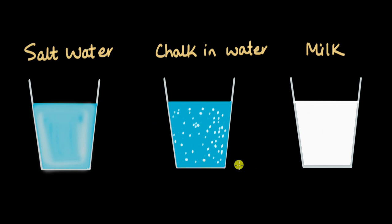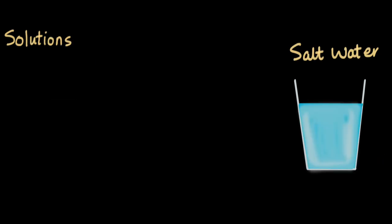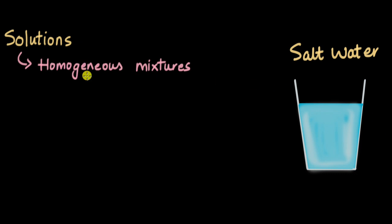We will talk about all of this and in doing so we will understand the differences between a solution, a suspension, and a colloid. Let's begin with solutions. Taking salt water as our example, the first characteristic of a solution is that it's a homogeneous mixture, which also means that the solute — in this case, salt — is evenly and uniformly distributed across the body of the water.